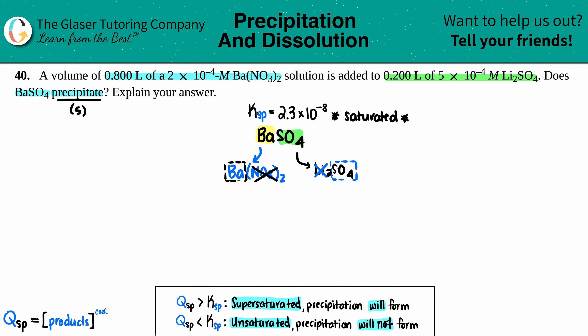This is where we use M₁V₁ = M₂V₂. Since there's only one barium in Ba(NO₃)₂, the starting barium ion concentration is 2×10⁻⁴ M. Similarly, since there's only one SO₄ in Li₂SO₄, the starting sulfate concentration is 5×10⁻⁴ M. We can apply M₁V₁ = M₂V₂ for each.